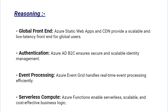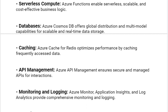For serverless compute: Azure Functions enable serverless, scalable, and cost-effective business logic. For databases: Azure Cosmos DB offers global distribution and multi-model capabilities for scalable and real-time data storage. For caching: Azure Cache for Redis optimizes performance by caching frequently accessed data. For API management: Azure API Management ensures secure and managed APIs for interactions.